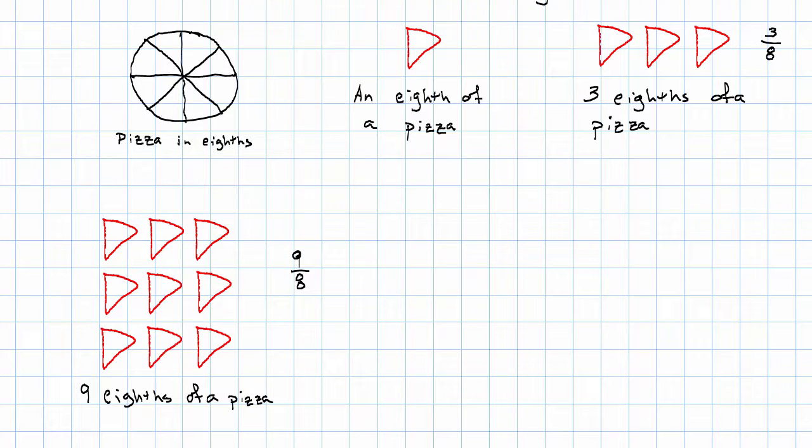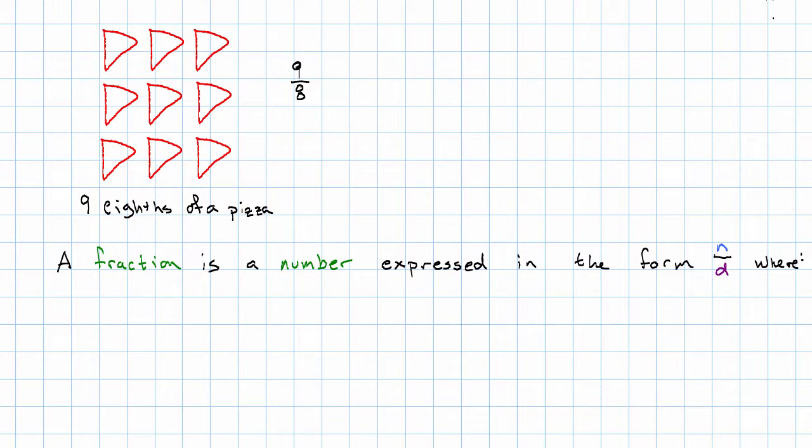And now we get an idea of what it is we're indicating by writing a fraction. What is it? A fraction is a number expressed in the form one number, fraction bar, another number, where there are requirements on the numbers. The number on top, that I named n, is called the numerator, and it can be any whole number.